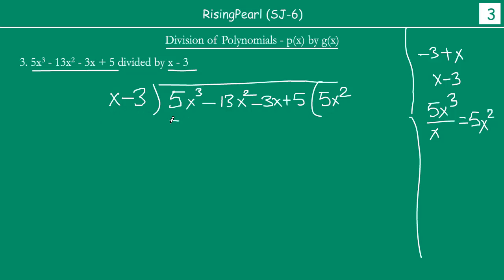5x square could be multiplied by all the terms of divisor. So 5x square times x will give you 5x cube. 5x square times minus 3 will give you minus 15x square. So plus multiply by minus will be minus, 5 times 3 is 15, and you will have x square.